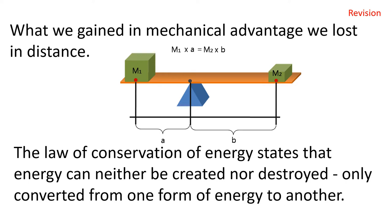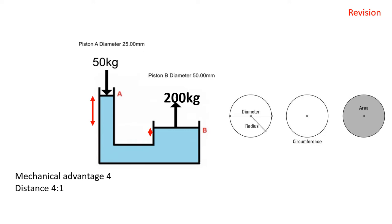The mechanical advantage or force is determined by the surface area of a hydraulic piston, not the diameter. As we can see in this diagram, piston A is 25 millimeters diameter and piston B is 50 millimeters diameter, but the mechanical advantage is 4 to 1. Again, the calculations are based on the surface area of the piston, not the diameter.